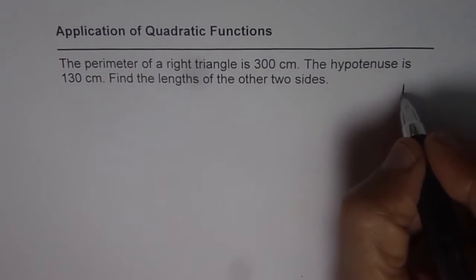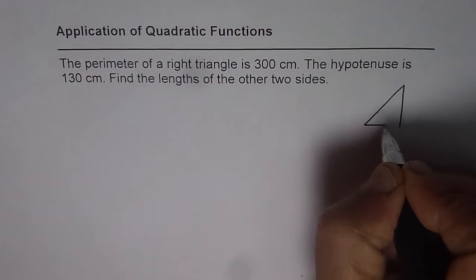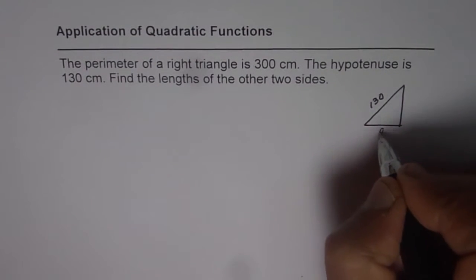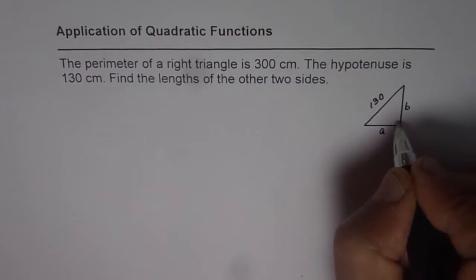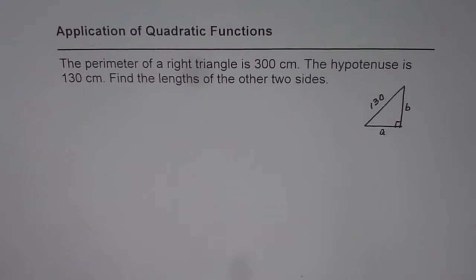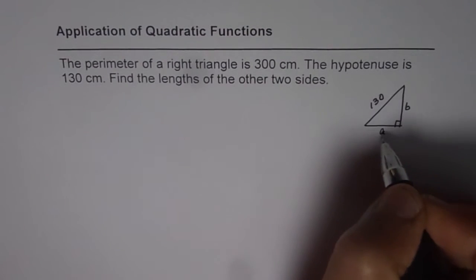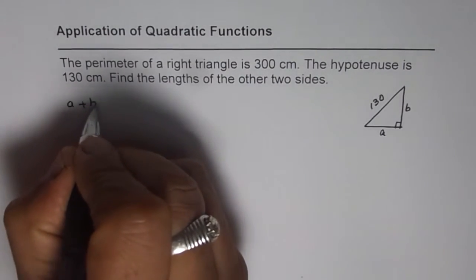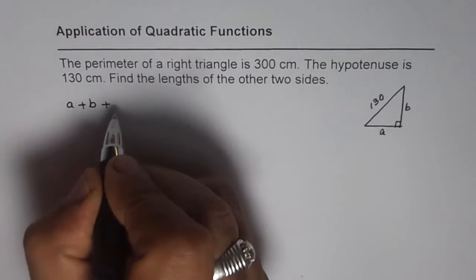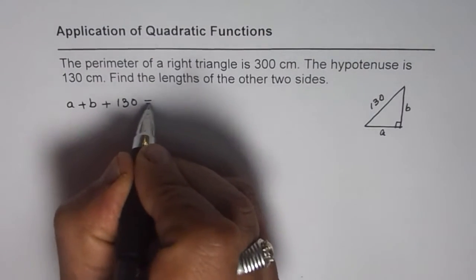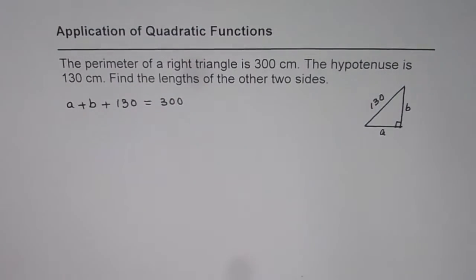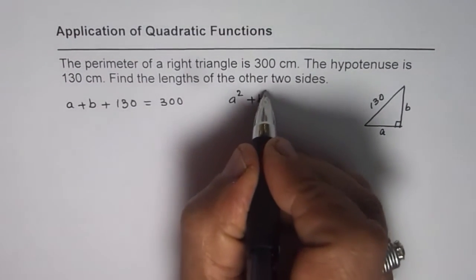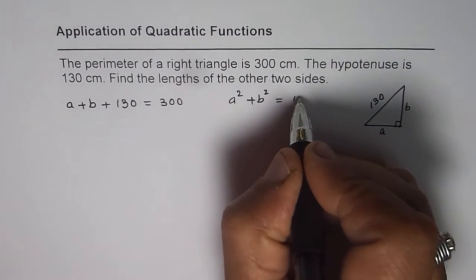So in a right triangle, let me sketch one here. We are given the hypotenuse as 130 centimeters and the other two sides, let them be A and B. We can write two relations. One of them is the perimeter: A plus B plus 130 equals 300. The other one comes from the Pythagorean theorem: A squared plus B squared equals 130 squared.